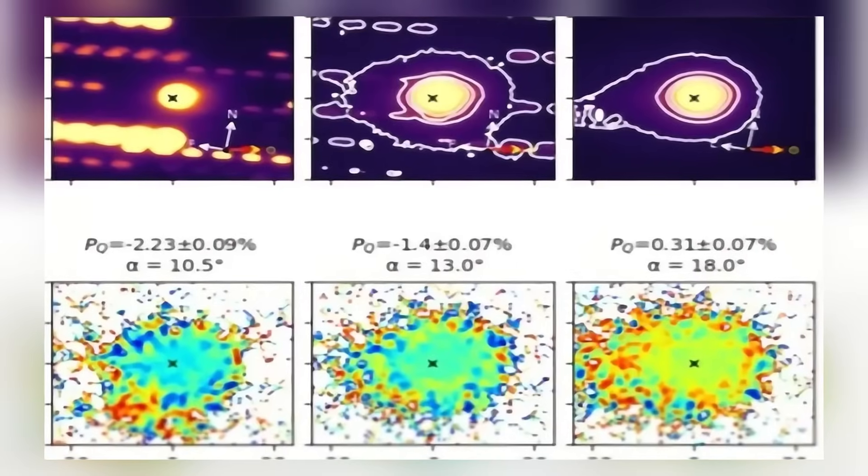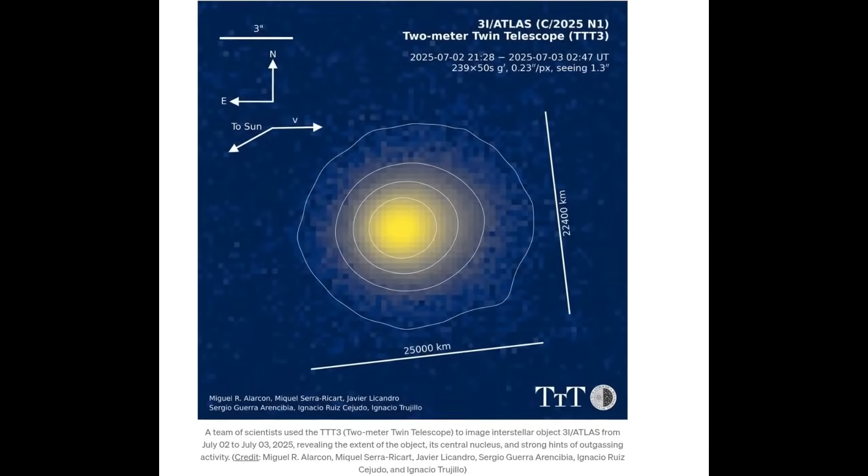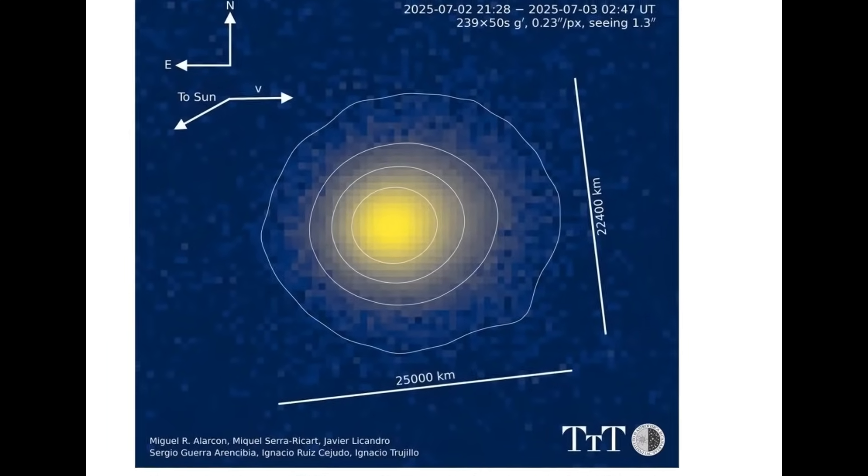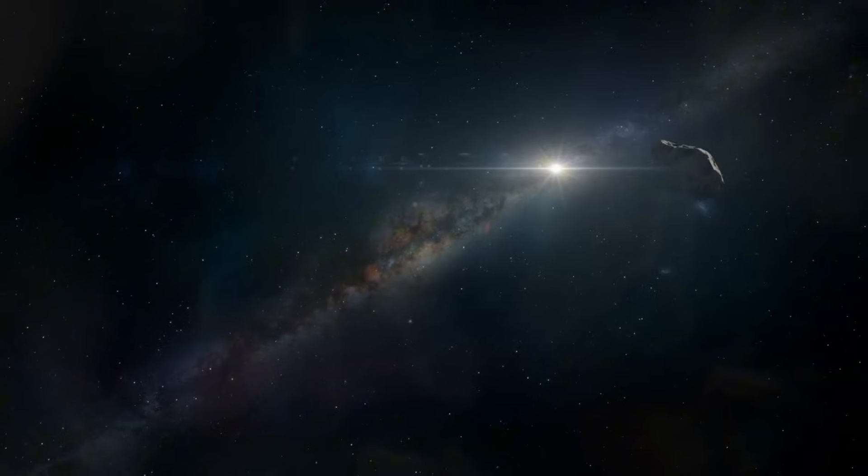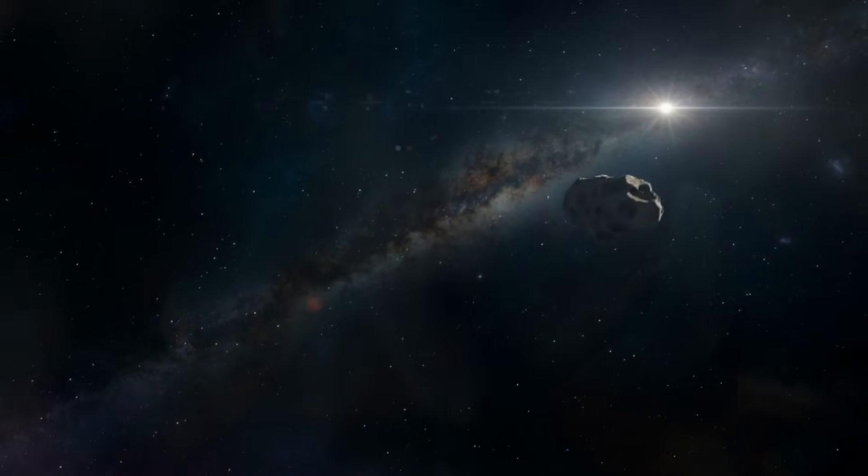The data don't line up neatly with what scientists expect from a normal comet. This leaves 3i Atlas suspended between categories—an object that refuses to wear the labels astronomy has relied on for centuries. Part of the fascination comes from its size. If the glow is indeed sunlight reflecting from a solid surface, the object could be up to 20 kilometers across—larger than Manhattan, far larger than any interstellar visitor humans have seen before.